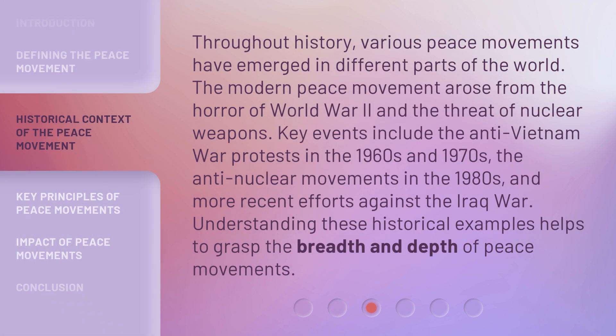Throughout history, various peace movements have emerged in different parts of the world. The modern peace movement arose from the horror of World War II and the threat of nuclear weapons. Key events include the anti-Vietnam War protests in the 1960s and 1970s, the anti-nuclear movements in the 1980s, and more recent efforts against the Iraq War. Understanding these historical examples helps to grasp the breadth and depth of peace movements.